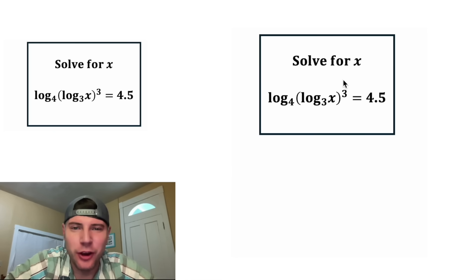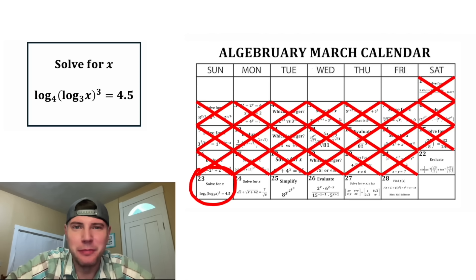Hey guys, this looks like a fun one. It says solve for x. We're given log base 4 of the quantity log base 3 of x whole thing cubed equals 4.5. This is day 23 of our Algebra March calendar.